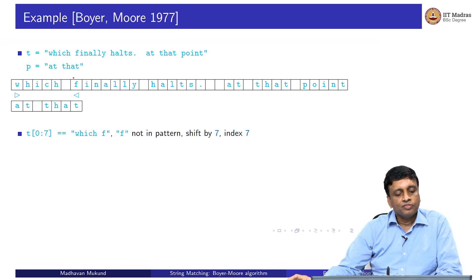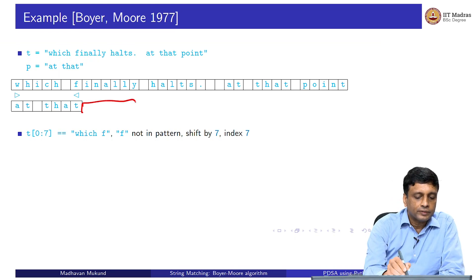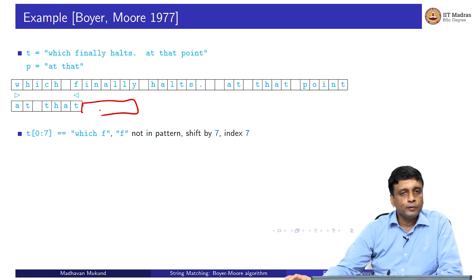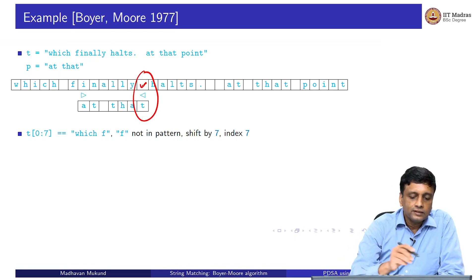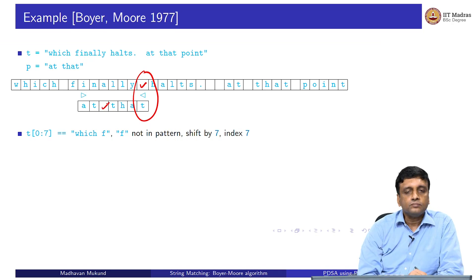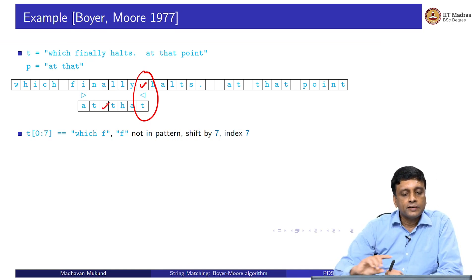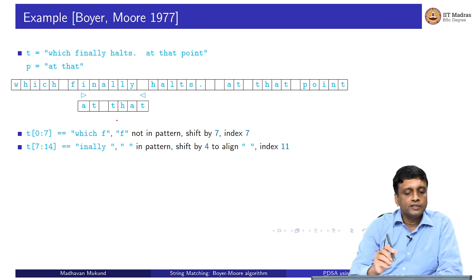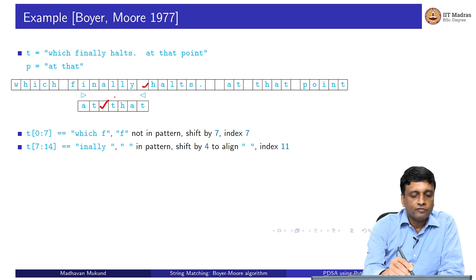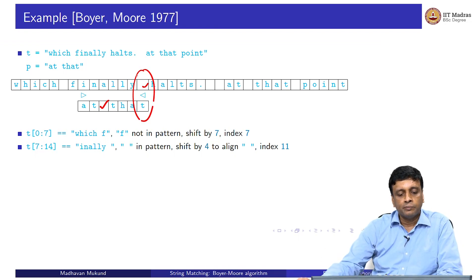The mismatch involves the letter 'f', which is not in the pattern. The rule says if a letter is not in the pattern, we must shift the entire pattern to start from beyond that letter — in this case shifting to position 7. Now scanning from the 'i' in 'finally' onwards, we again have a mismatch at the rightmost position, but this rightmost position is a space and the space does occur in the pattern. We must shift by 4 — the difference between the two positions — to align the spaces.